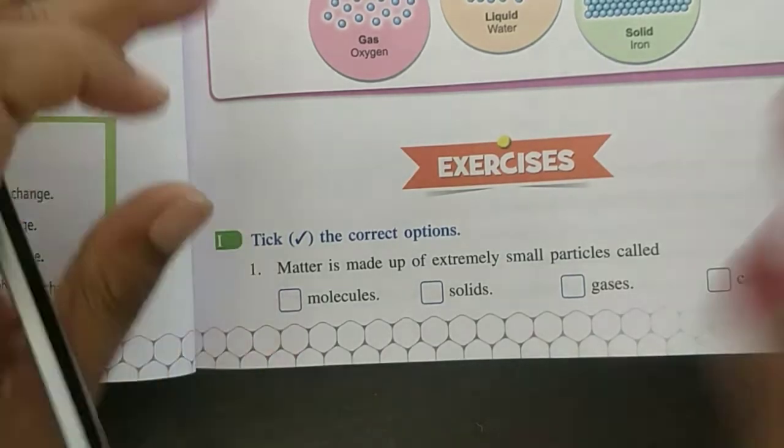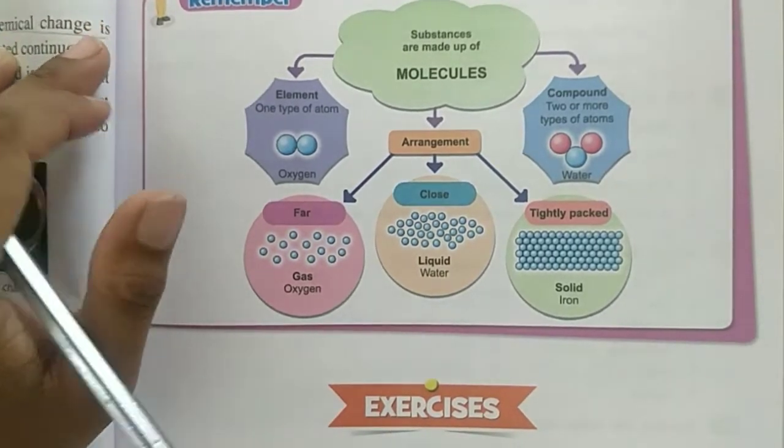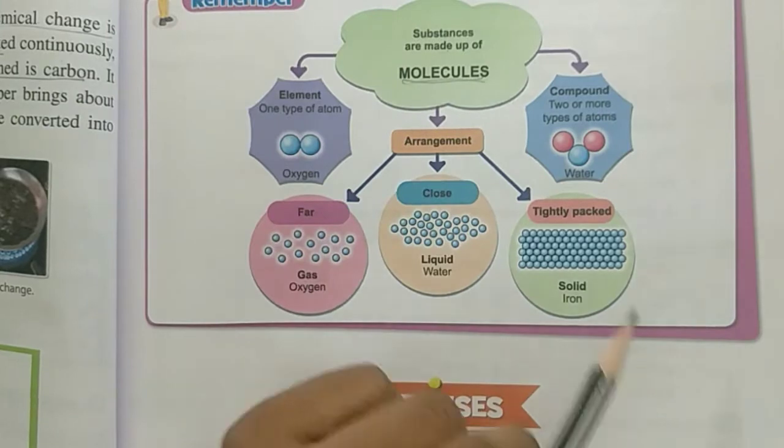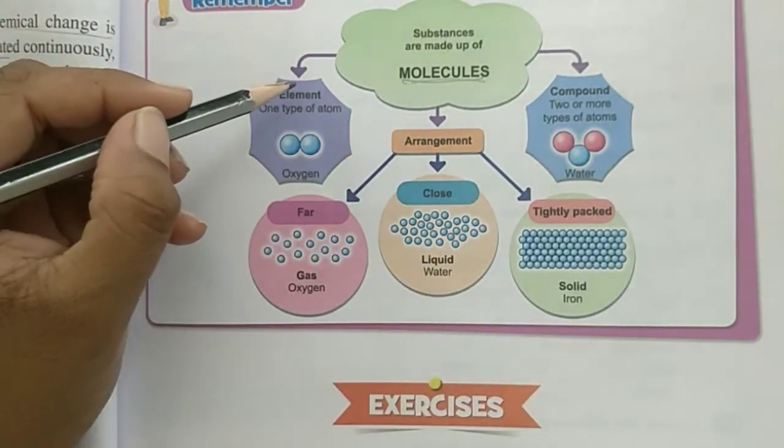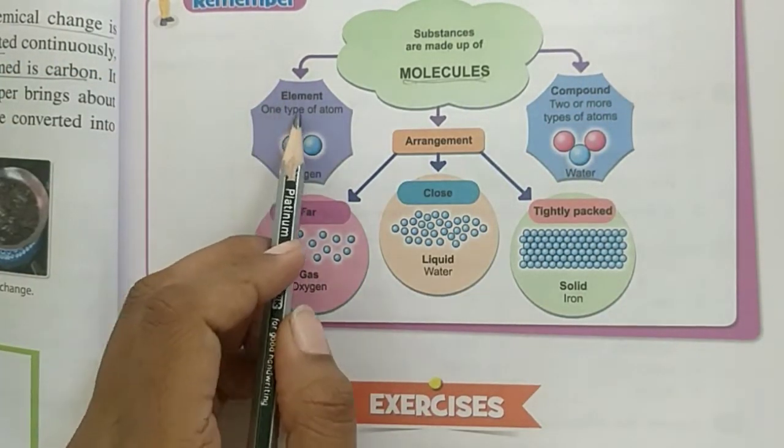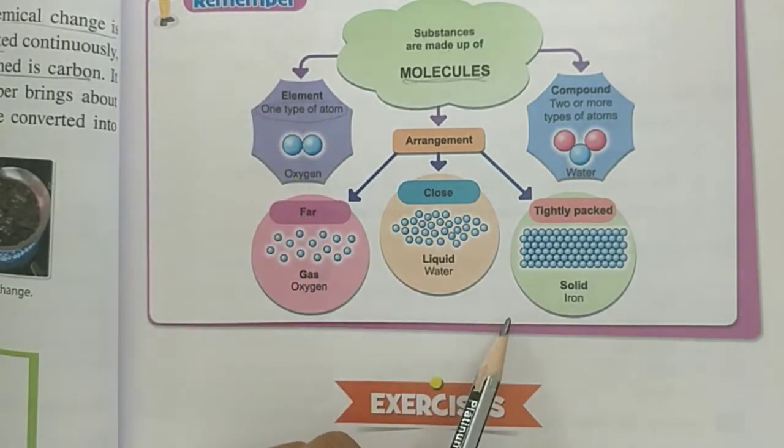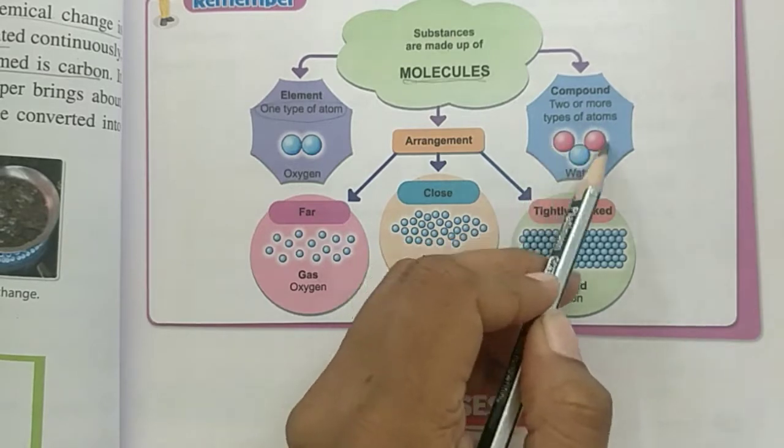So first of all we have to remember some points for this chapter. Substances are made up of molecules. Then element and compound. Element is one type of atom. Compound is two or more types of atoms.